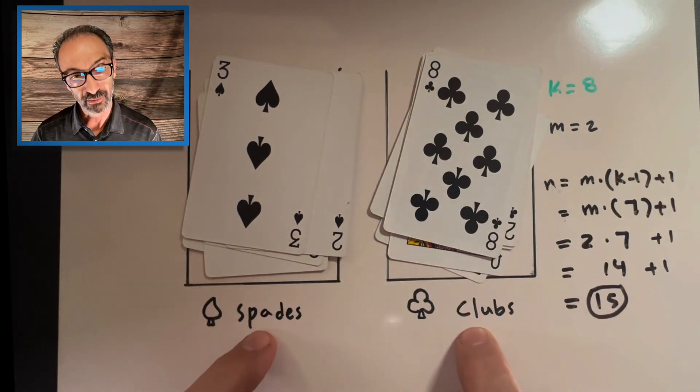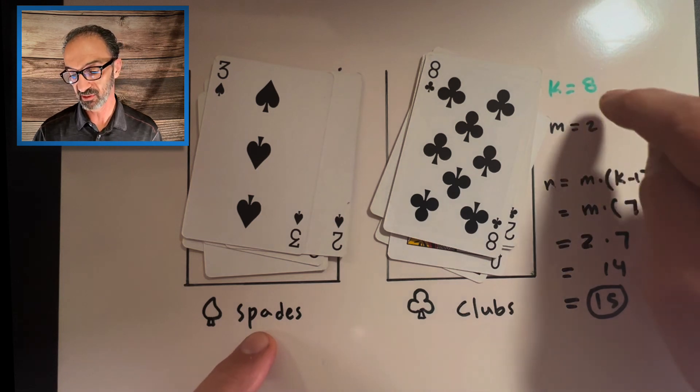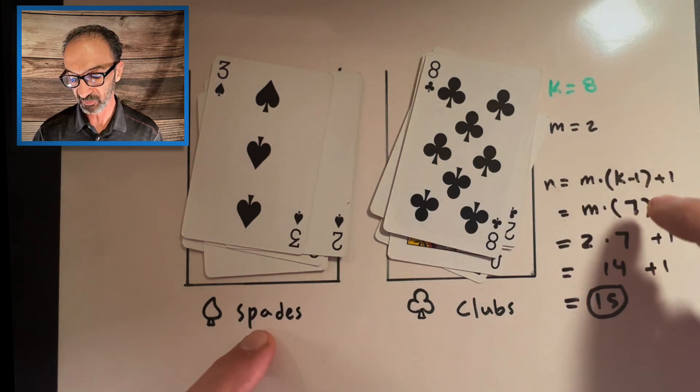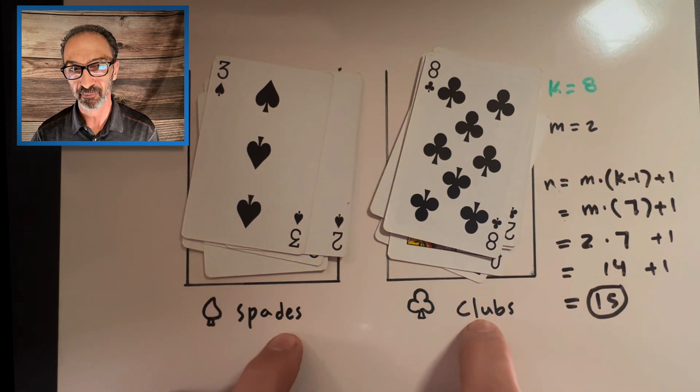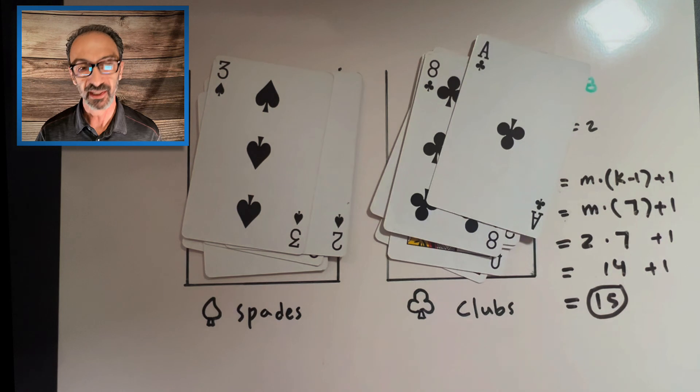I think that should do it. It's so clear once you identify the two holes and the number k that you are seeking. Take it down by one, multiply it by the number of holes times m, then add one more.